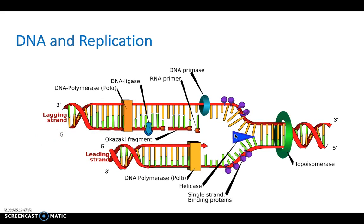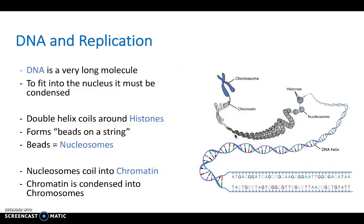So remember DNA is a very long molecule and to fit them into the nucleus it must be condensed. So the double helix coils around what we call histones and this forms beads on a string and these beads are nucleosomes. And the nucleosomes coil into chromatin which become your chromosome and then this condenses into the nucleus within the cell. So remember that diagram we saw at the start how we're all human with cells and then we have chromosomes and DNA. This shows the breakdown from chromosome down all the way to DNA level.